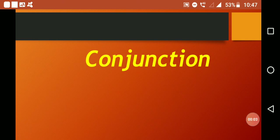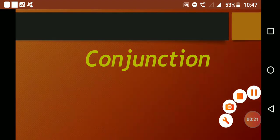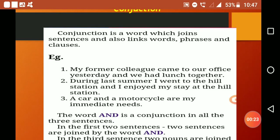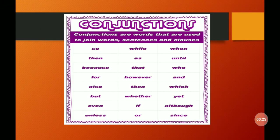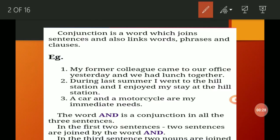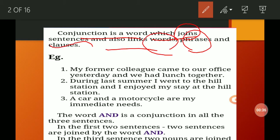Hello students, today we are going to discuss conjunctions — what is a conjunction and how conjunctions are used in a sentence. A conjunction is a part of speech that is used to connect words, phrases, clauses, or sentences. Let's begin. A conjunction is a word which joins sentences and also links words, phrases, and clauses.